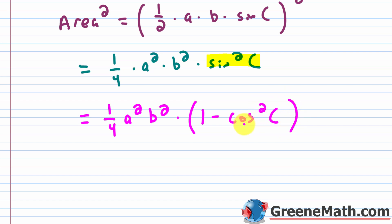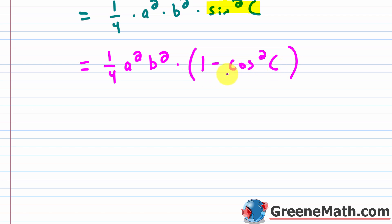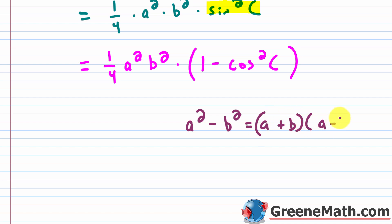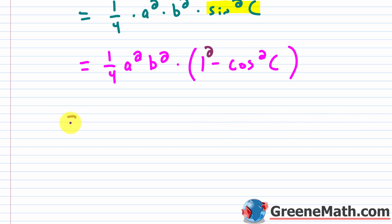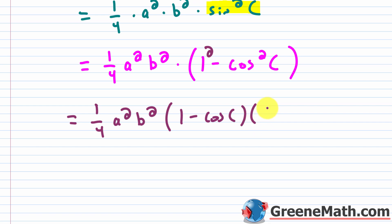Now we're going to use the difference of squares formula to factor 1 minus cosine squared C. Remember, A squared minus B squared factors as the quantity A plus B times the quantity A minus B. So 1 minus cosine squared C factors because 1 can be written as 1 squared. This gives us one fourth times A squared times B squared times the quantity 1 minus cosine C times the quantity 1 plus cosine C.